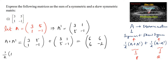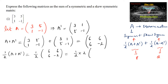So 1/2 times of A plus A transpose equals 1/2 times of [6,6;6,-2]. Taking 2 as common, we get [3,3;3,-1]. So half of A plus A transpose is the matrix [3,3;3,-1].